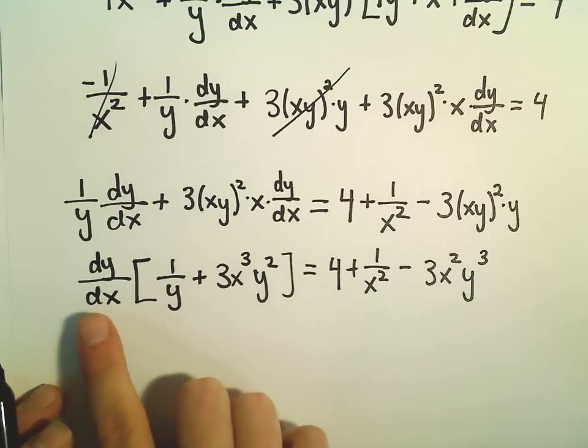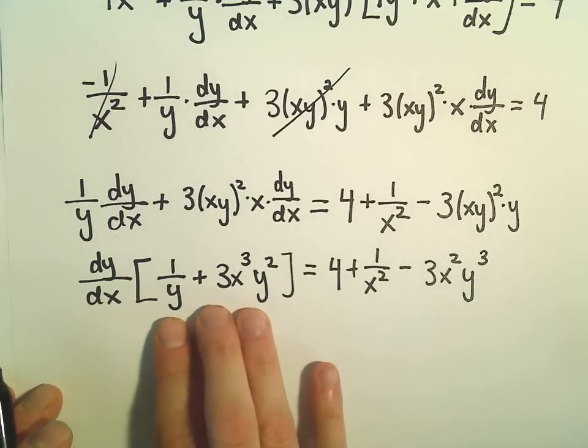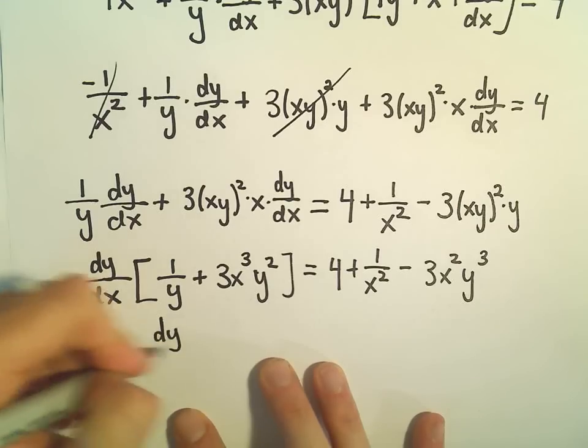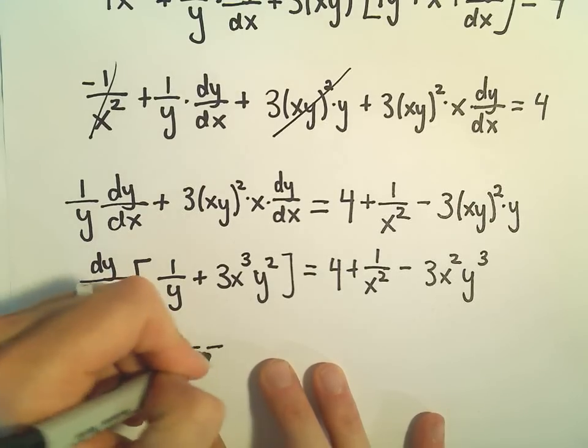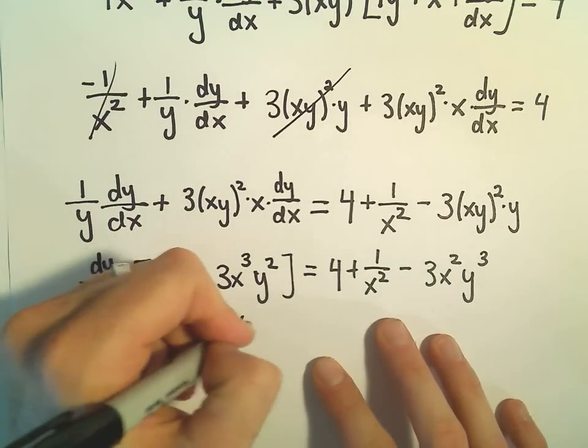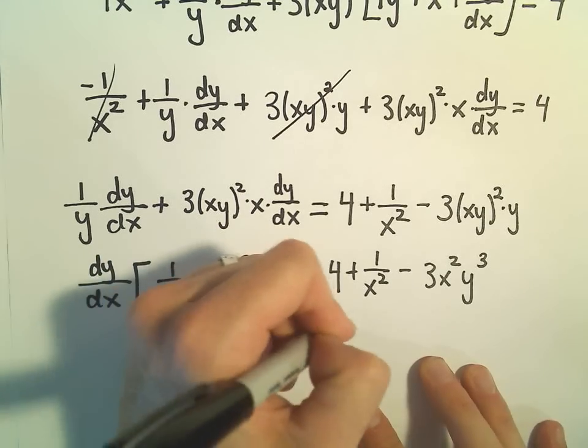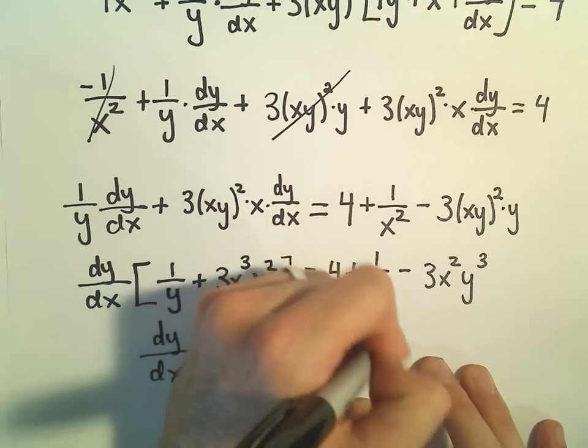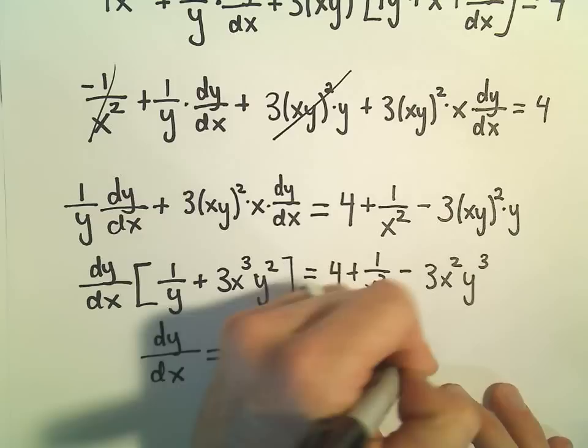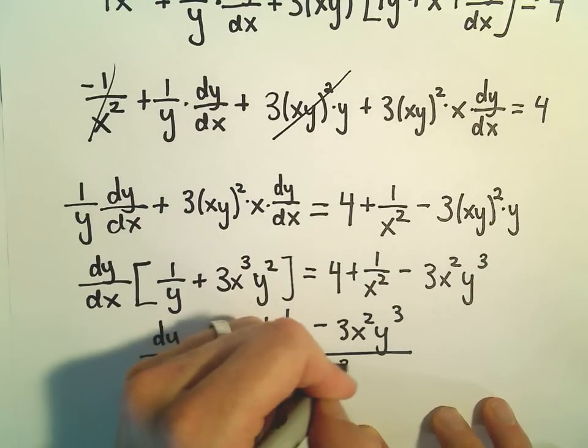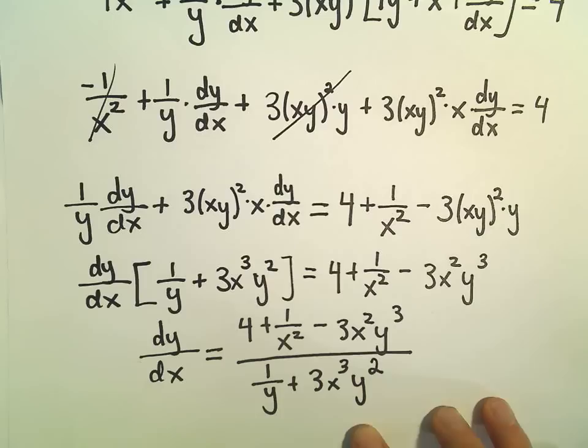Last but not least, to get the dy dx all by itself, I'm going to divide by this 1 over y plus 3 x cubed y squared, and then we will have our solution. We now have dy dx, so this is 4 plus 1 over x squared minus 3 x squared times y to the third, all divided by 1 over y plus 3 x cubed times y squared.